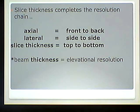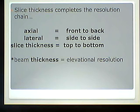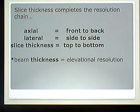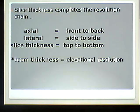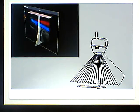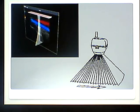Lateral resolution was determined by beam diameter; well, beam thickness determines elevational resolution. The closer two objects are top to bottom — above and below each other — and we can still see them as two separate individual things, the better our elevational resolution. The beam has a length, a height, and a width.